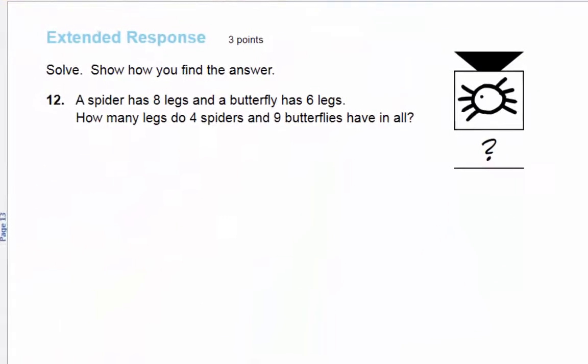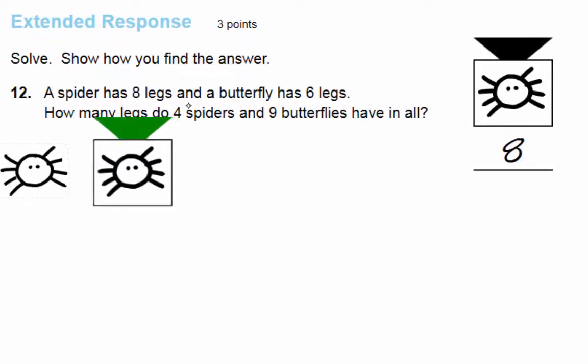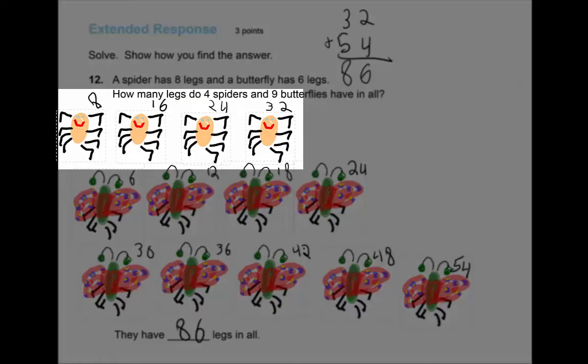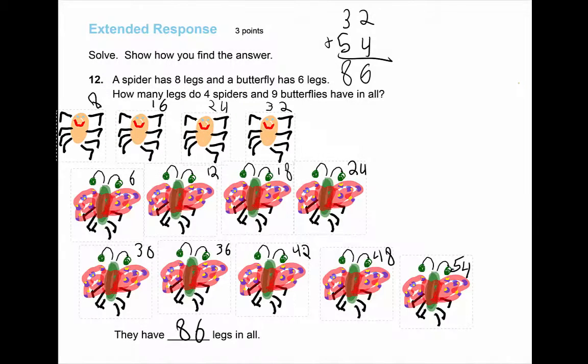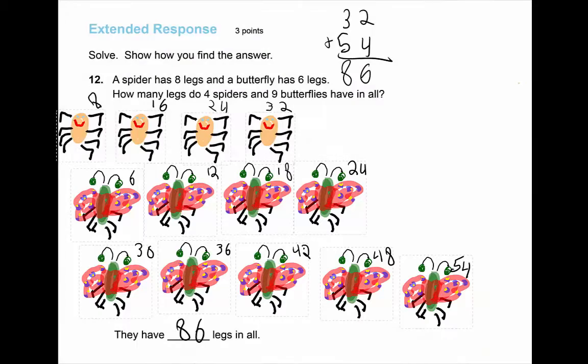For this problem, students create a stamp, enter the number of objects it represents, and make copies by dragging on the stamp handle. This student drew a spider with eight legs and stamped four copies. Then she drew a butterfly with six legs and stamped nine copies. She skip counted to find the answer.